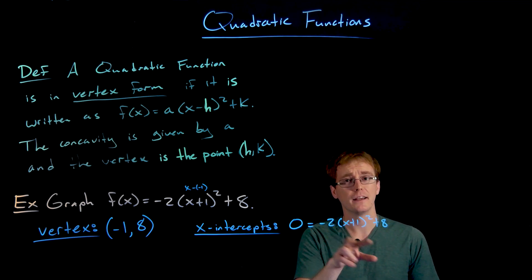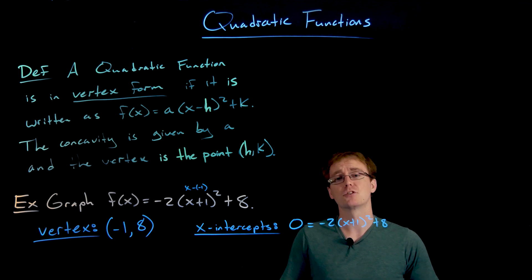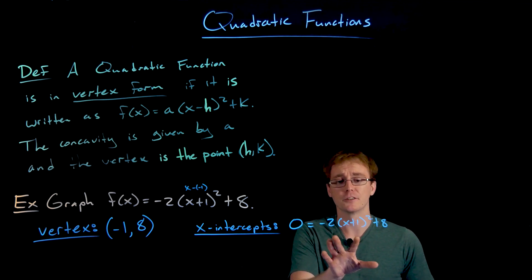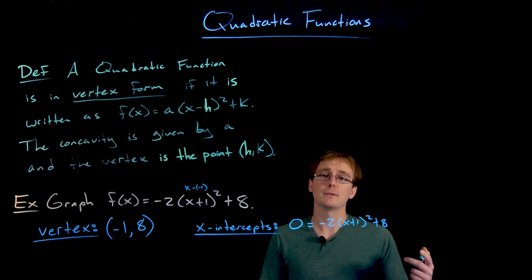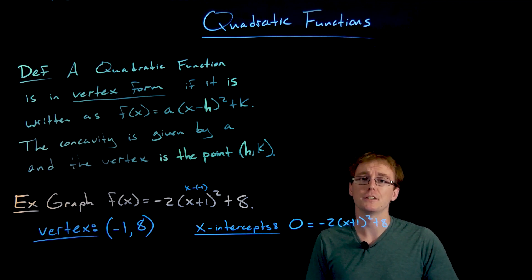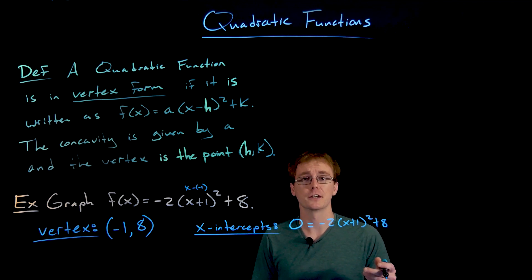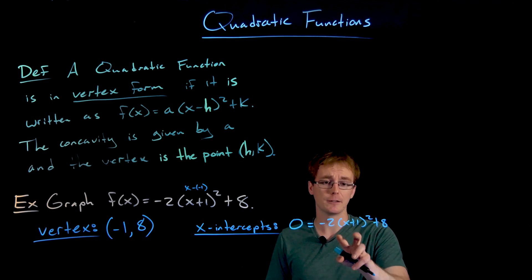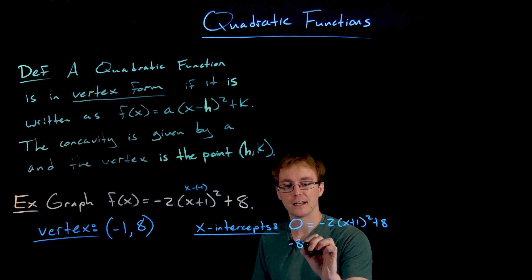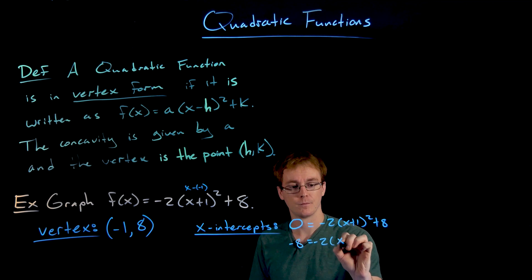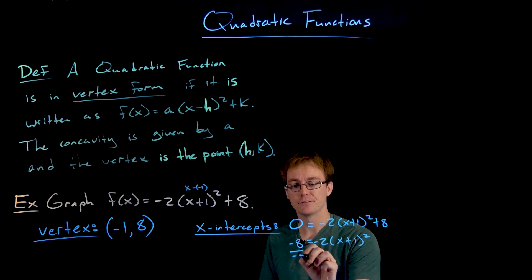We can't factor it right away just because it's not written in that standard form. It's not all expanded, and we can't use the quadratic formula either. We just have to basically solve this quadratic equation using the square root method, which you probably saw in an earlier algebra class. We start by isolating this quantity squared. So we have to subtract eight from each side and then divide both sides by negative two.